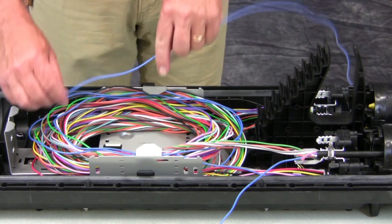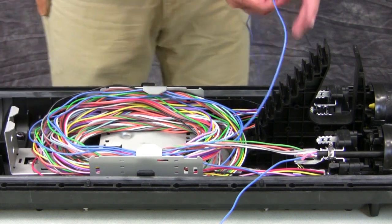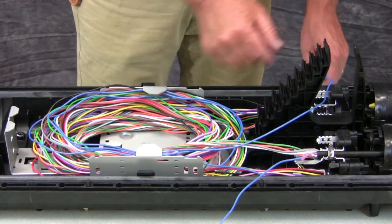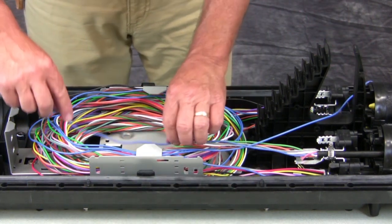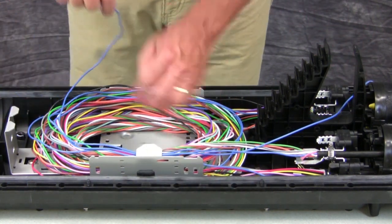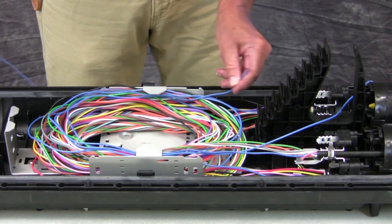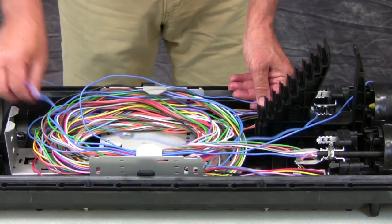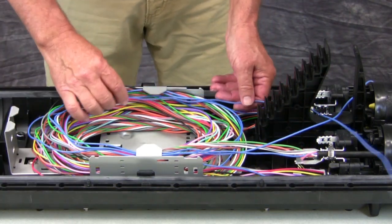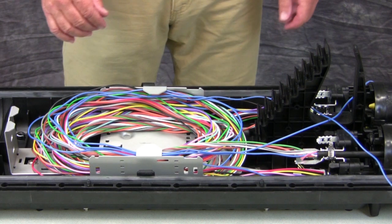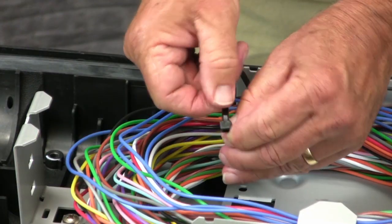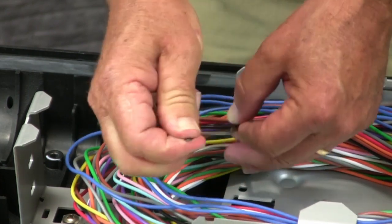Route the buffer tubes to be spliced to the splice trays by placing one loop in the basket and then looping the remainder around the tray tower as shown. Use tie wraps to organize the buffer tubes in the basket.